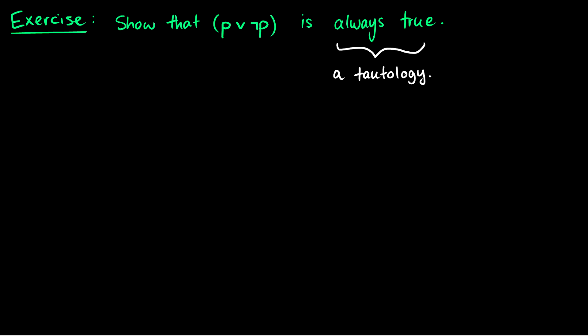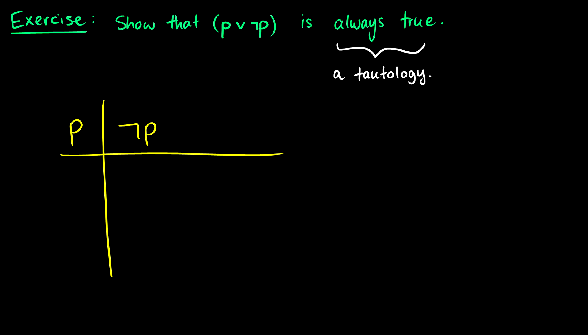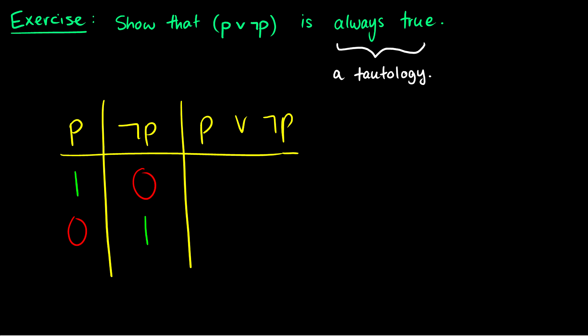Now I have a couple of exercises. First, I want to show that P∨¬P is always true — this is known as a tautology, meaning every single value in our truth table is one. We build our truth table starting with P, then ¬P, then P∨¬P. P can be true or false. If P is true, ¬P is false; if P is false, ¬P is true. P∨¬P is true if at least one is true — in row one P is true, in row two ¬P is true. Therefore P∨¬P is a tautology and will always be true.